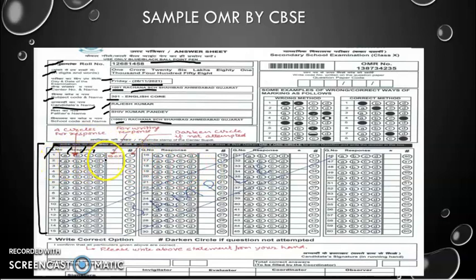The first four options are A, B, C, D. First you circle the question number, and suppose my answer is C — this is the way with the ballpoint you have to circle the option. Because I have a choice in a section, I can leave four questions, and if I decide to leave a question I have to darken that circle. Those questions you are not attempting, you circle them in that column.